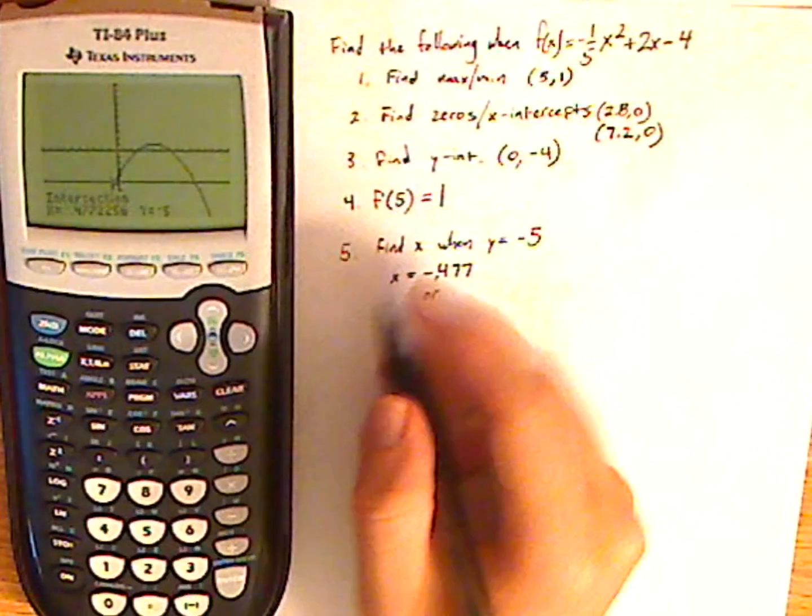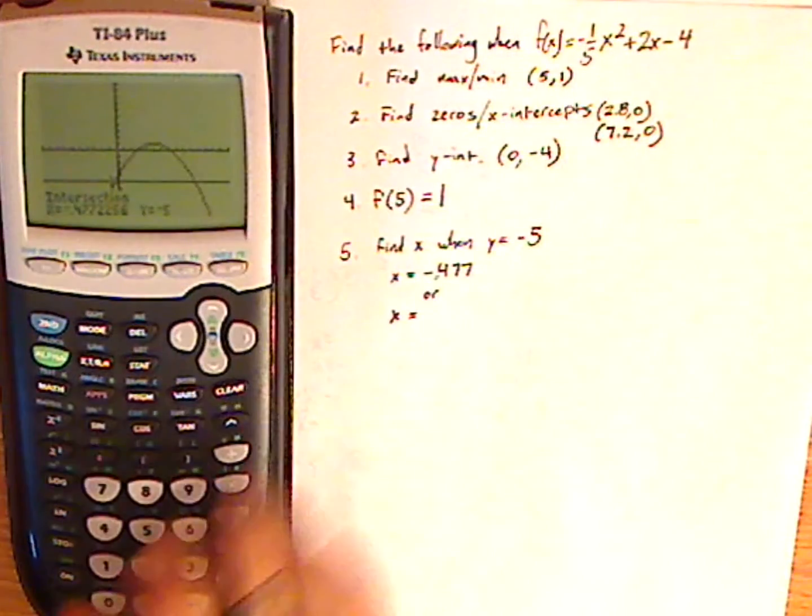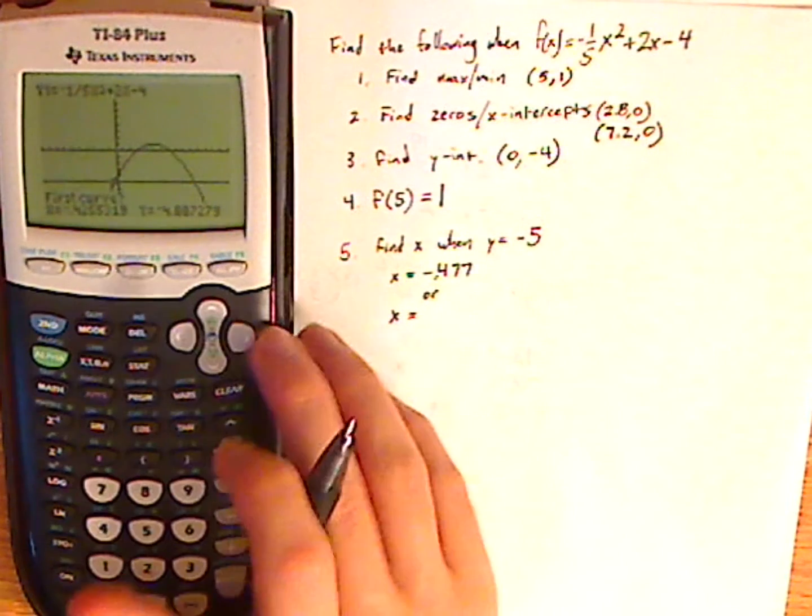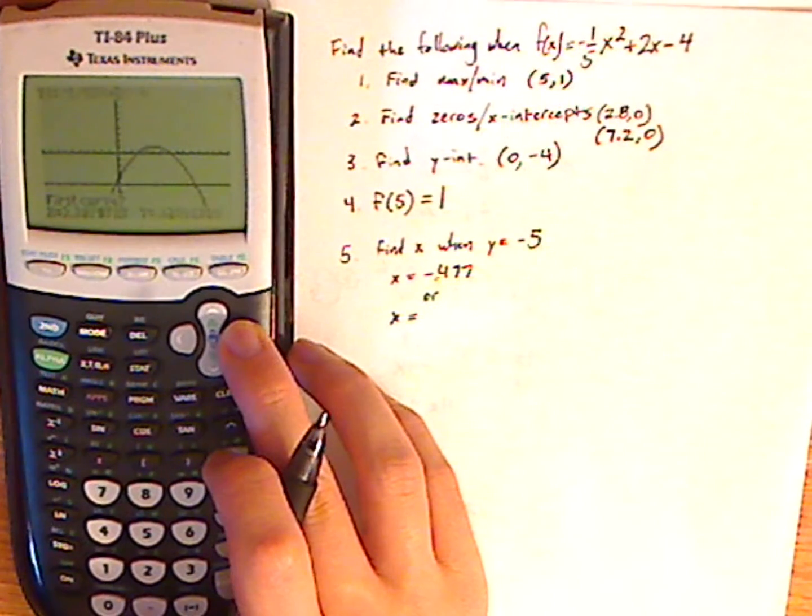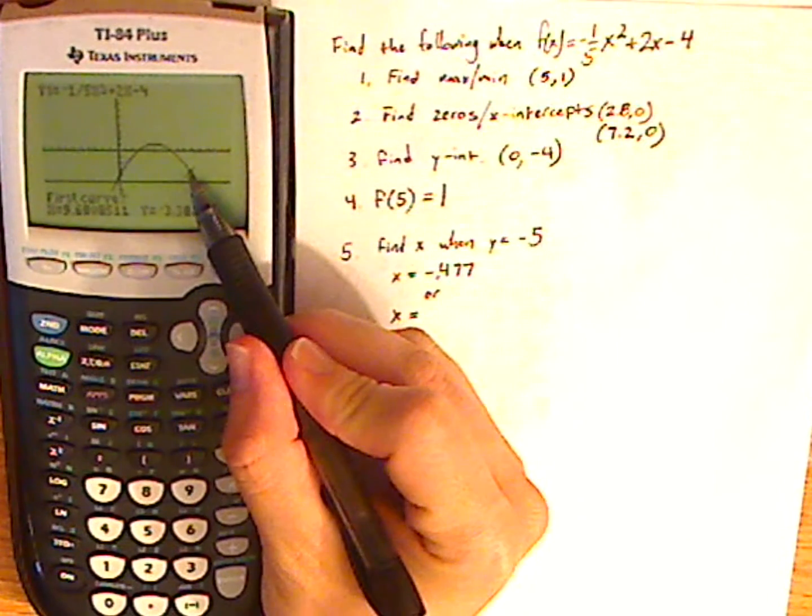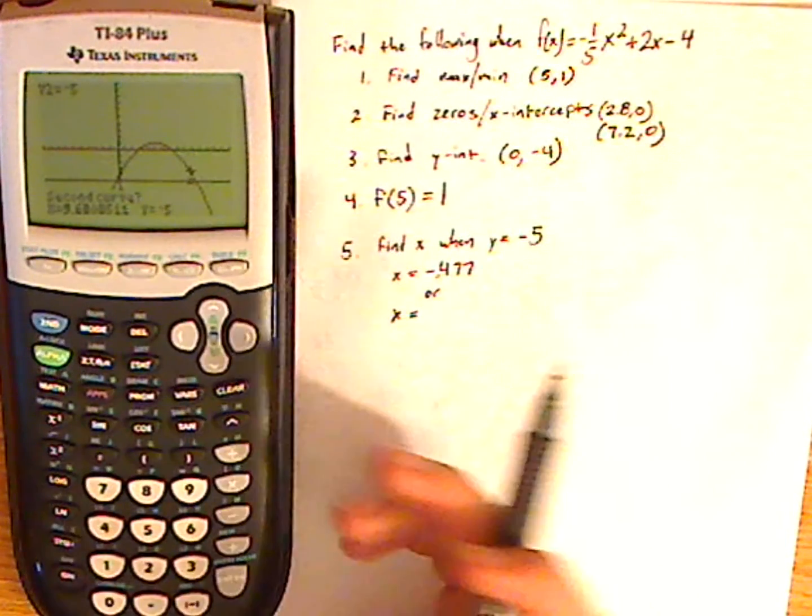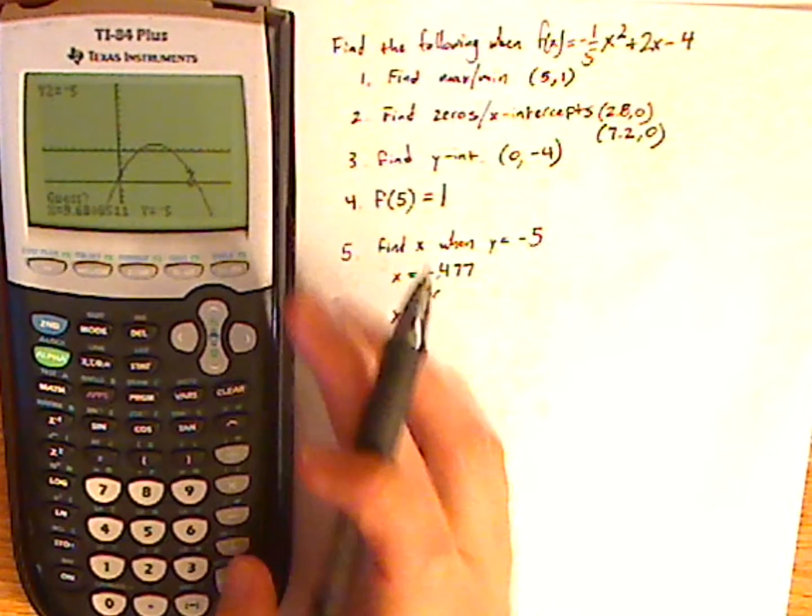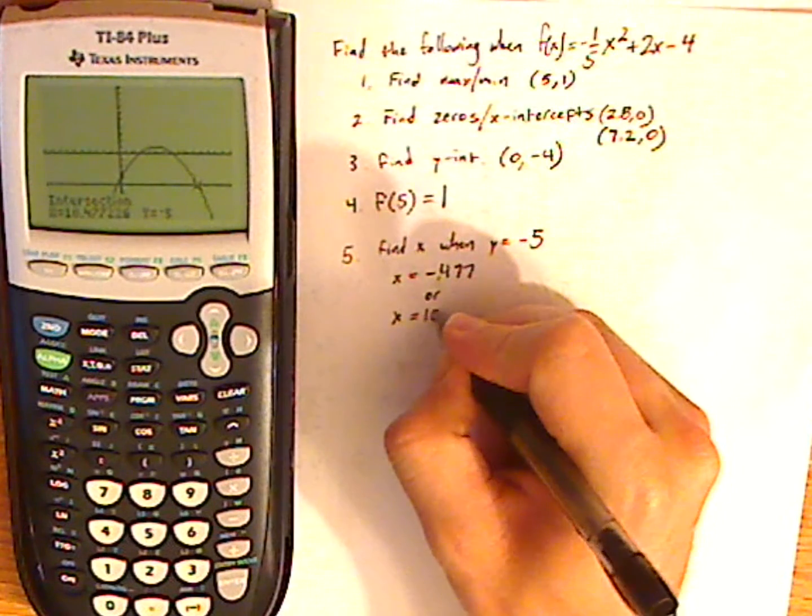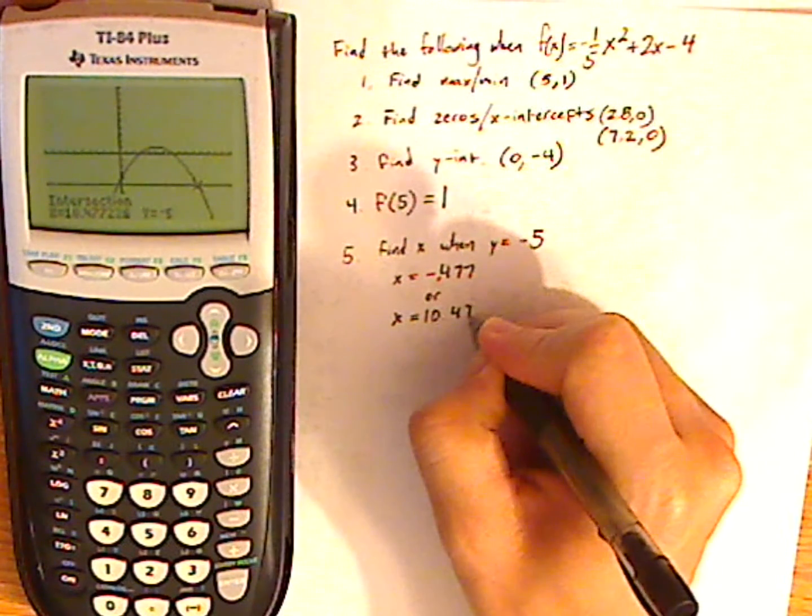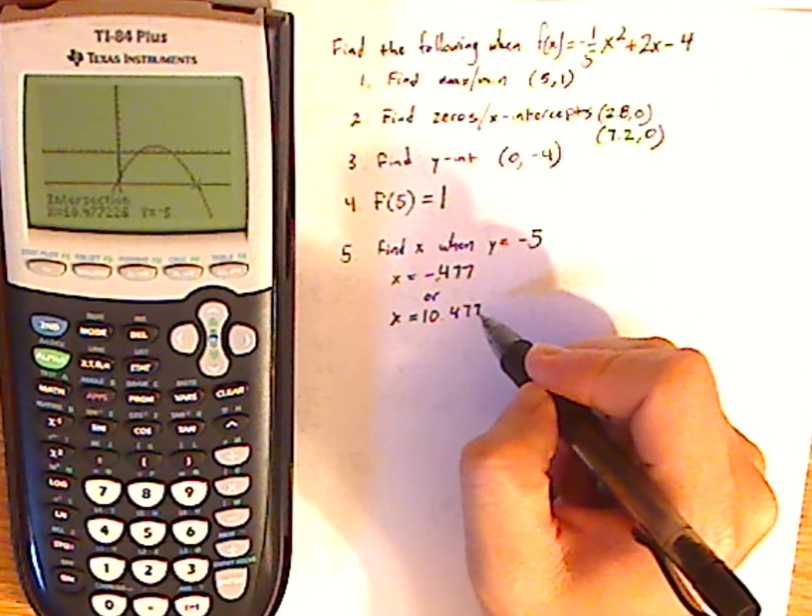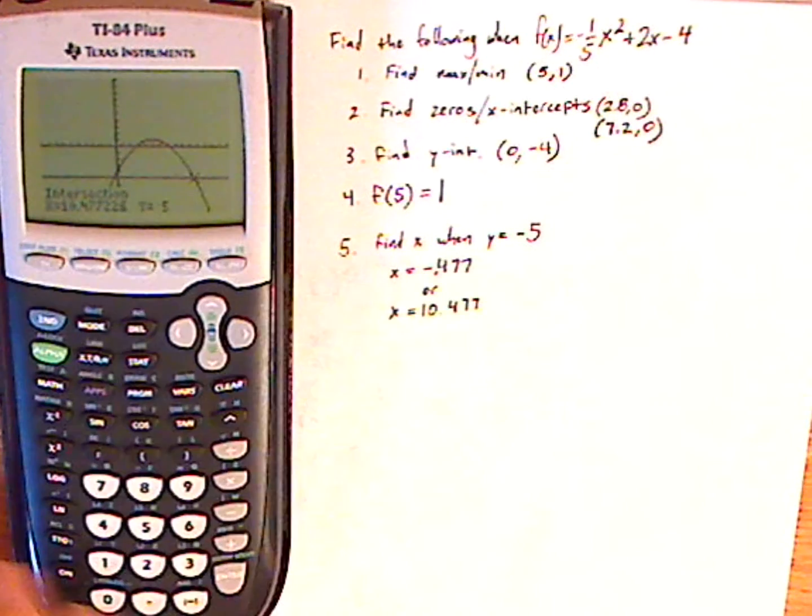Now, it's going to have another possibility over here. And so I do 2nd, calc, number 5, intersect. And I get as close as I can to that other intersection as possible. All right, there's my little point. If you can see it. Click enter once. 2nd curve. And then you're close to it. And then just push guess. So again, it's 10 point, three decimal places, yeah, 10.477. All right. So there you go. And that's it.